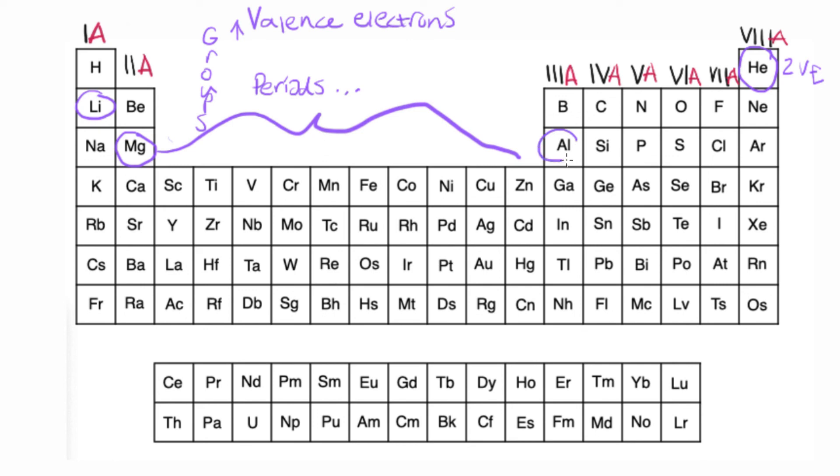Aluminum would have 3 valence electrons and so forth. So you just need to look at which group that it's going to be located in in order to determine the number of valence electrons that it's going to have.